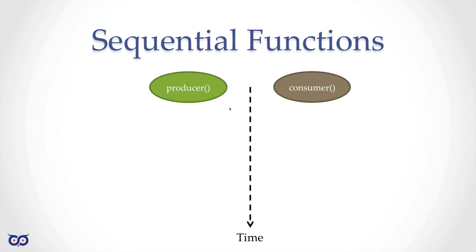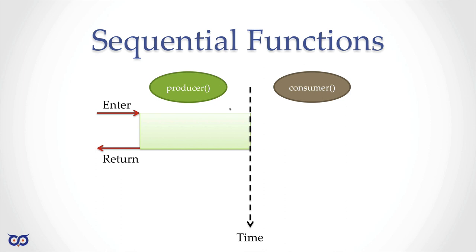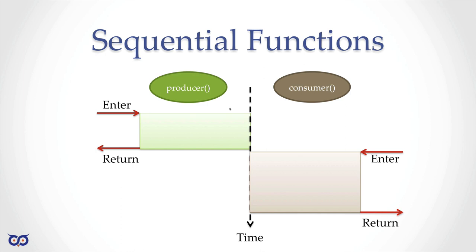Before we get into any sort of coding, let's get some concepts and terminology out of the way. Let's talk about sequential functions. If I have two functions — one called producer and one called consumer — and I want the producer to create some data which my consumer will then use, my producer must run first. When I call my producer function, it runs to completion first. My producer must run to completion before my consumer can work. This is how we've been writing code so far — sequential functions.